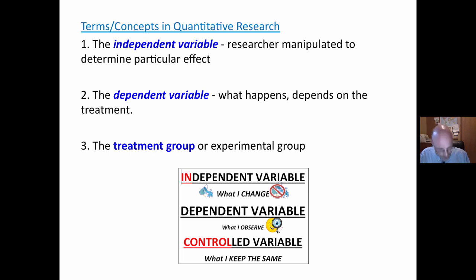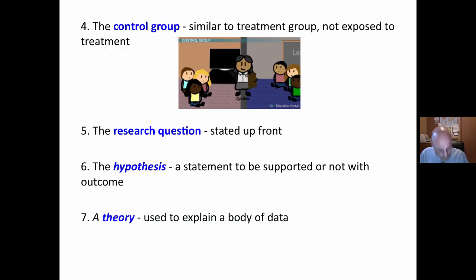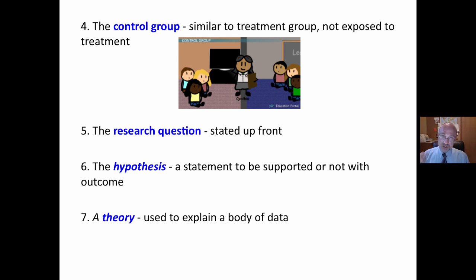The treatment group is the group of subjects or participants that are exposed to the treatment. The control group is a group as similar as possible — it has all the characteristics of the treatment group; however, this group is not exposed to the particular treatment or approach, for the purpose of comparison. The research question is stated up front. This is what the researcher hopes to find, and you only focus on that research question. Everything else is ignored.